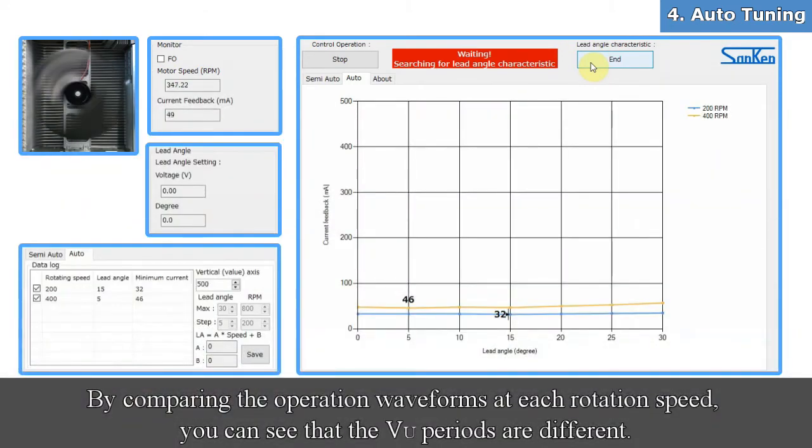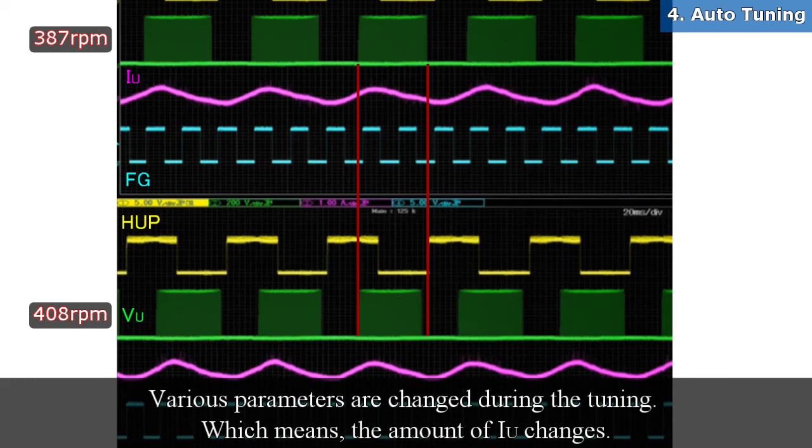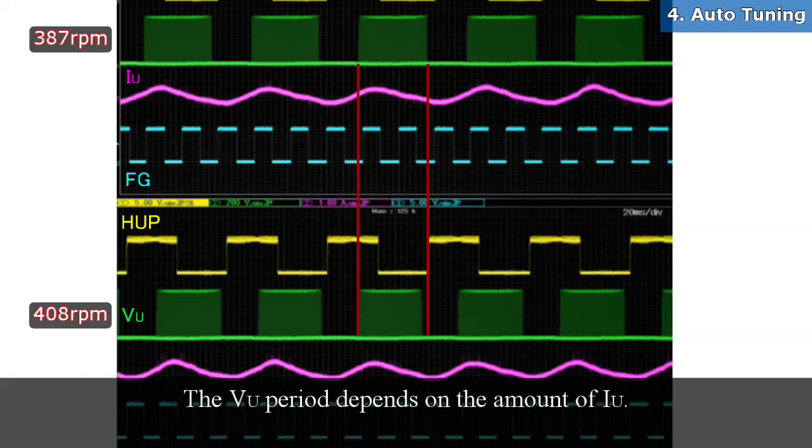By comparing the operation waveforms at each rotation speed, you can see that the VU periods are different. Various parameters are changed during the tuning, which means the amount of IU changes. The VU period depends on the amount of IU.